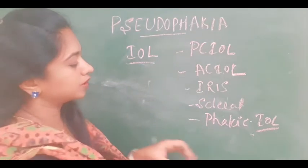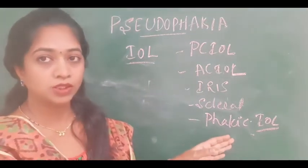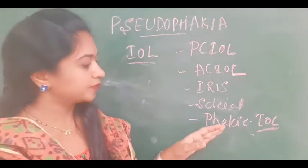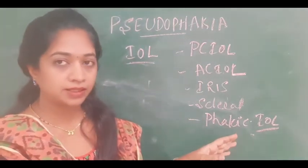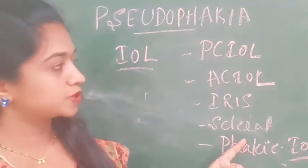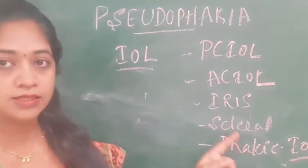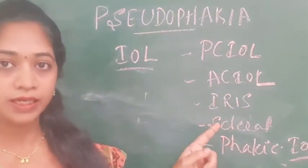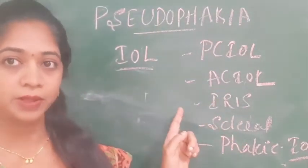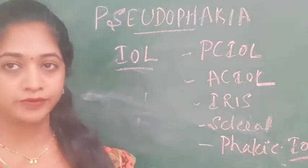This phakic intraocular lens is placed over the crystalline lens which is already there, thereby correcting the refractive error. These are the types of intraocular lenses. Along with their advantages and disadvantages, I have explained in my previous video on phakic IOLs.